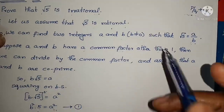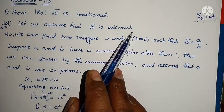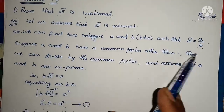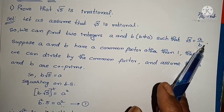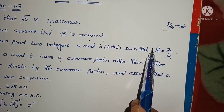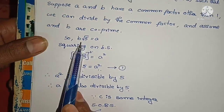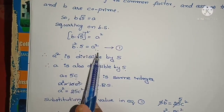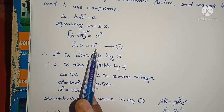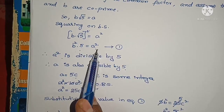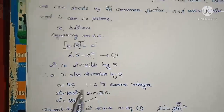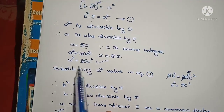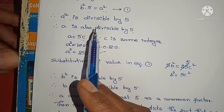Briefly: I considered root 5 is rational, so I wrote it in the form a by b. Cross multiplying and squaring both sides gives 5b² = a², so a² is divisible by 5 and therefore a is divisible by 5. Writing a = 5c and squaring gives a² = 25c², which I substituted back into equation 1.